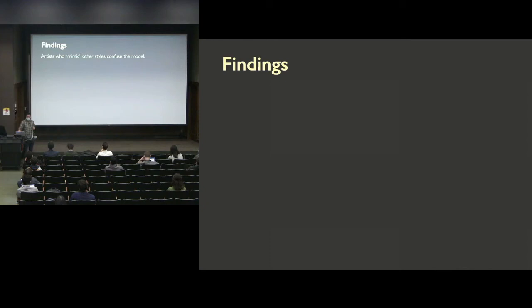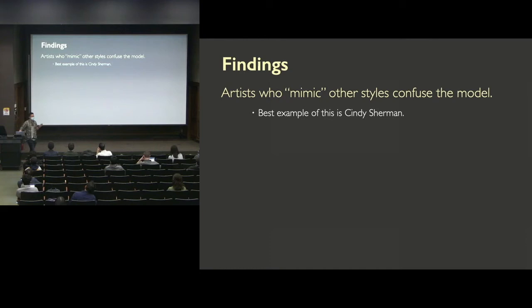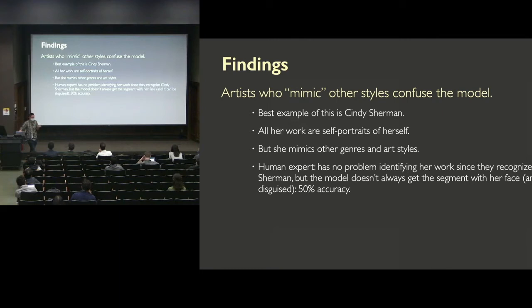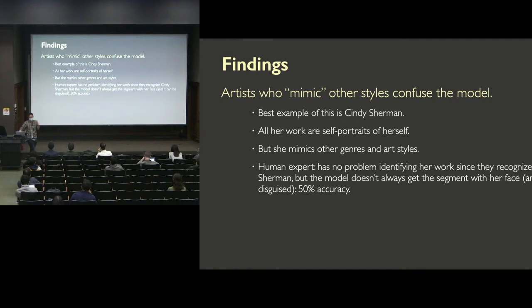The third finding is that artists who mimic other styles in their work often confuse the model. The best example is Cindy Sherman's work — she's an incredibly famous artist whose work consists entirely of self-portraits mimicking different genres of art and film. A human expert will have no problem identifying her work since they recognize Cindy Sherman. But a model doesn't always get the segment with her face, which can be disguised, and there's only 50% accuracy across the board for her work. The computer algorithm is essentially saying: 'I have no clue what's going on here.'